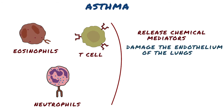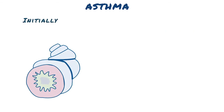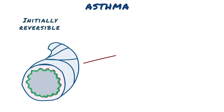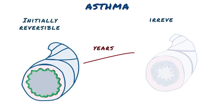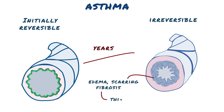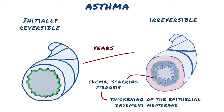Initially, these inflammatory changes are completely reversible, but over the years irreversible changes start to take place. Edema, scarring, and fibrosis build up, leading to thickening of the epithelial basement membrane, which permanently reduces the airway diameter.